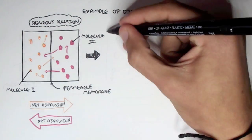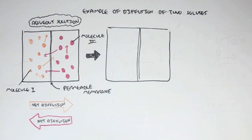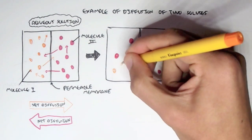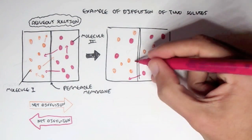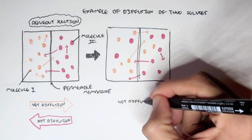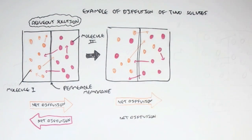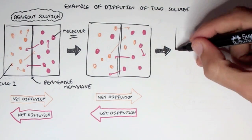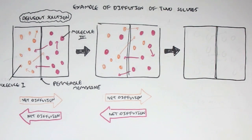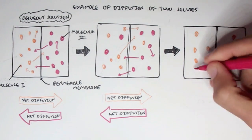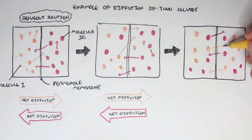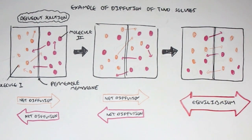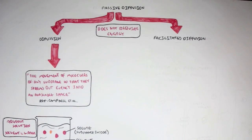The red molecules have a net diffusion moving to the left because they are low concentrated there. As we progress, the molecules start to even out — there's still more red on the right and more orange on the left, so diffusion is still occurring. Eventually we reach equilibrium with four oranges and four reds on each side, moving at equal rates. This is essentially what diffusion does — it balances the number of molecules across a permeable membrane.